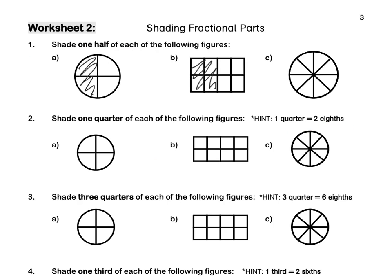For 2A, we're going to shade 1 out of the 4 pieces. For 2B, if we look at the top row, I've got 4 pieces and I'm going to shade 1 out of those 4. At the bottom row, I have another 4 pieces and I'm going to shade another 1 out of those 4. So in total, I've shaded 2 out of 8 pieces. Pause this video to complete question 2.